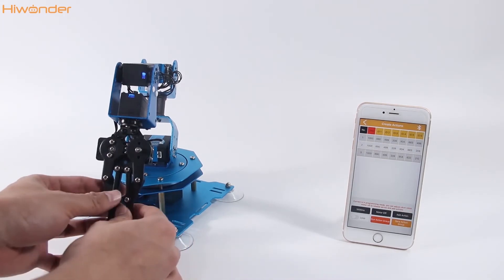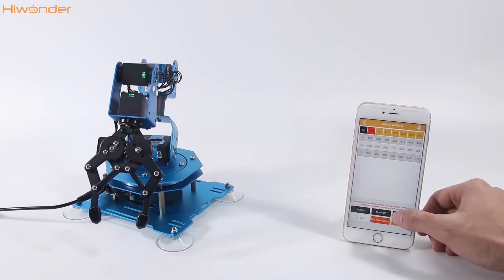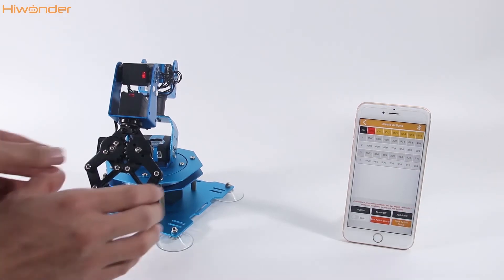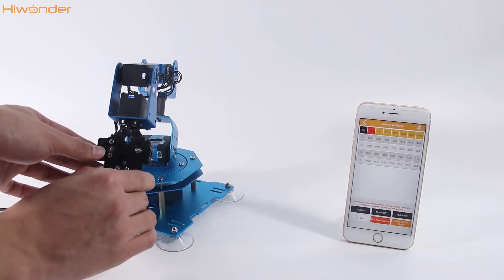Open the gripper and set it as the fourth. Then close the gripper as number five.